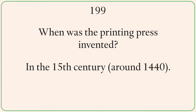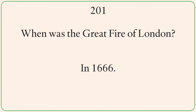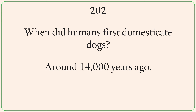When was the printing press invented? In the 15th century, around 1440. Who is known as the King of Pop? Michael Jackson. When was the Great Fire of London? In 1666. When did humans first domesticate dogs? Around 14,000 years ago.